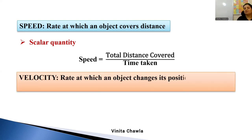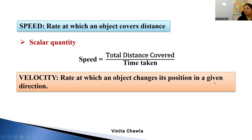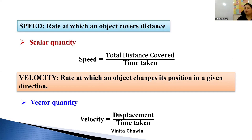Velocity is the rate at which an object changes its position in a given direction. Displacement is the shortest distance between the initial and final position. So velocity is a vector quantity, and we write velocity as displacement upon time taken. For speed, we have distance upon time; for velocity, we have displacement upon time. Speed is scalar, velocity is vector.